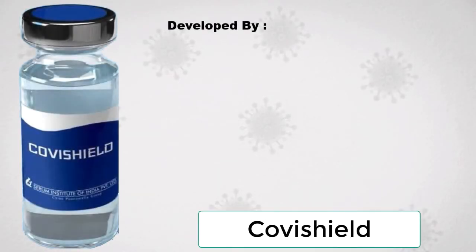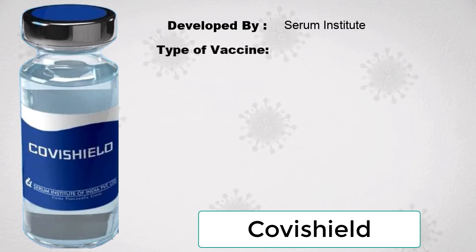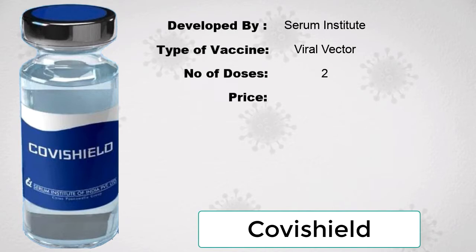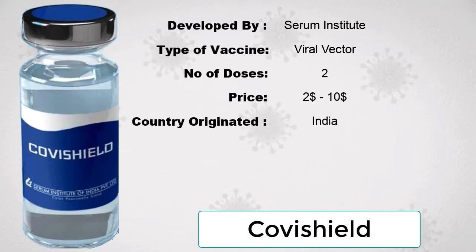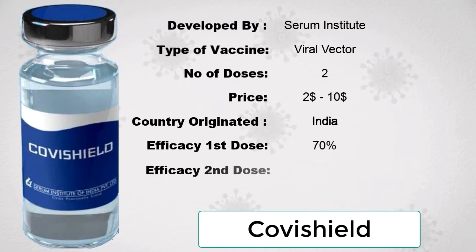The first is the Covishield vaccine, which is developed by CDM Institute. It is a viral vector type of vaccine. The number of doses needed is two. The price is $2 to $10 worldwide, and this vaccine originated from India.